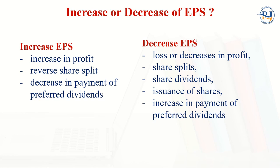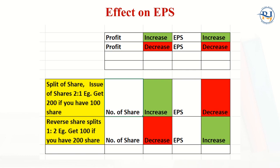When the number of shares decreases, EPS increases. If there is a decrease in preferred dividend payment, profit increases, and therefore EPS increases. On the other side, a share split decreases EPS, and share dividends also decrease EPS — because distributing more dividends means more expenses, less profit, and therefore less EPS. Issuing more shares increases the number of shares outstanding, which decreases EPS. Also, an increase in preferred dividend payment will decrease EPS.